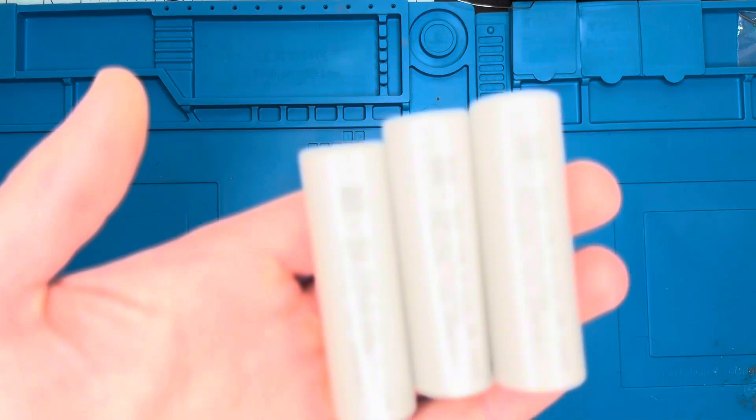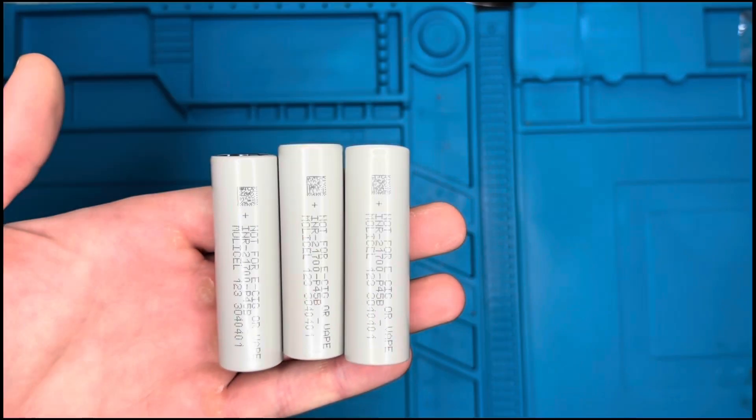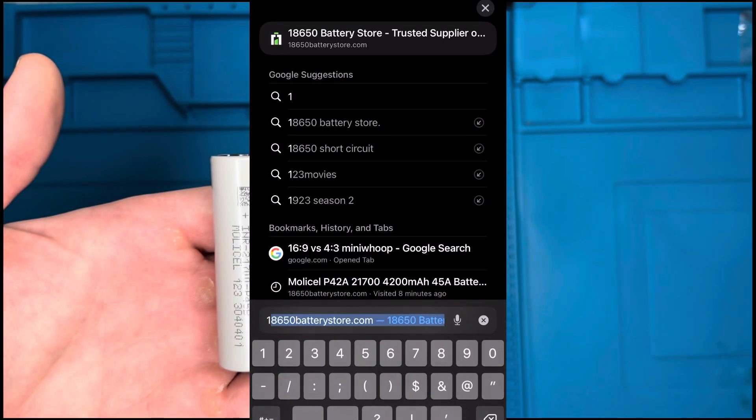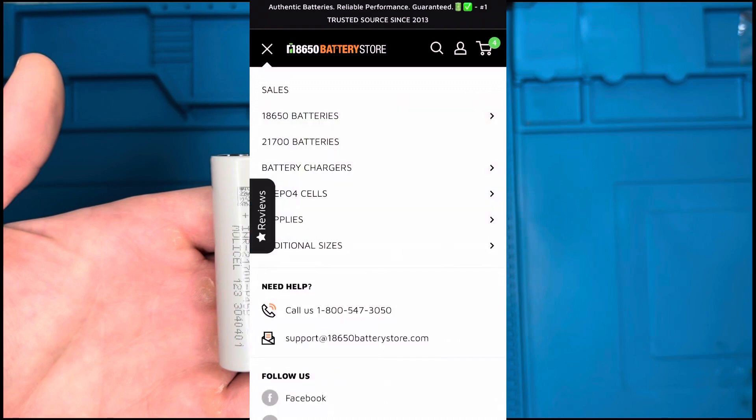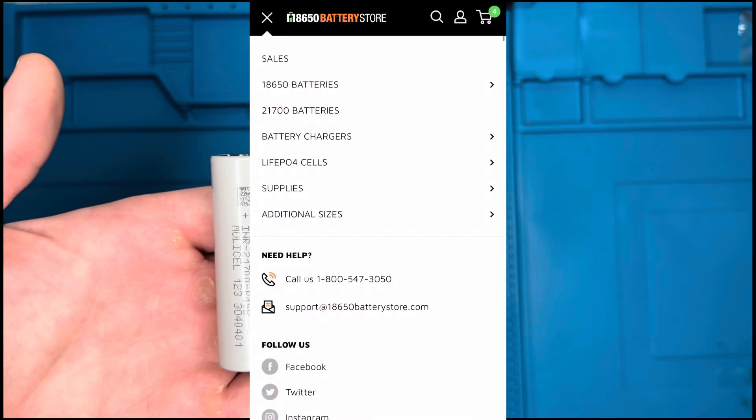First thing you got to do is source your cells. You want to get them from an authentic source like 18650 Battery Store. Do not go to Amazon or eBay. Half the time you won't get legit cells.